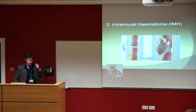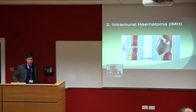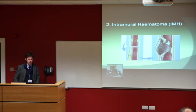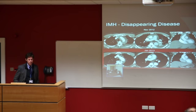The next stage of the process — if you imagine a continuum, though all of these can occur in isolation — is an intramural hematoma. Some people believe this is a rupture of the so-called vasa vasorum, the vessels within the wall of the aorta. But it can also occur as a penetrating ulcer that bleeds, instead of bleeding beyond the adventitia, just keeps bleeding within the wall of the aorta. It can be a so-called disappearing disease — I believe in this, though I'm probably in a minority, having seen enough cases to understand the natural history.